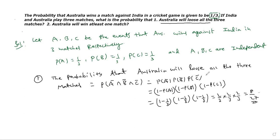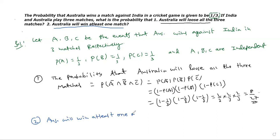Which is 8 by 27. The probability that Australia will lose all three matches is 8 by 27. Now, second case: Australia will win at least one match — the probability that Australia will win at least one match, which is P of A union B union C.